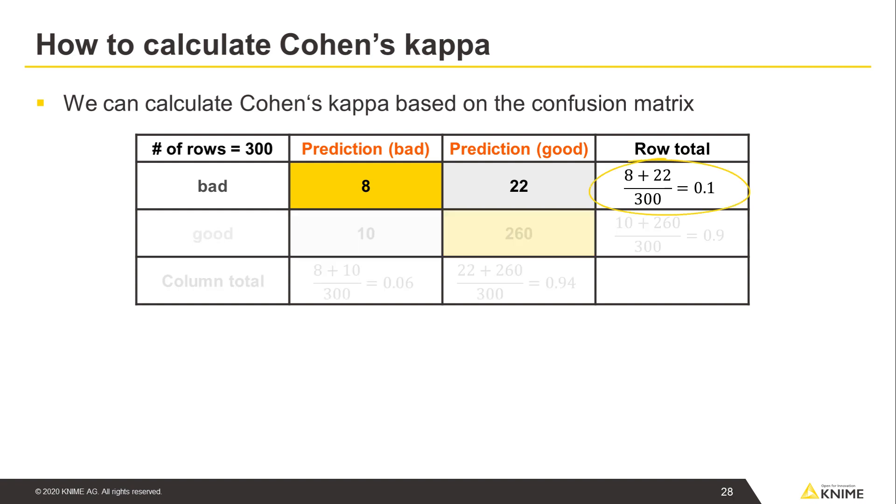Here in a top row total value, we see the a priori probability of the class bad, 10% in our case. In the left column total value, we see for how many customers the model predicted the credit rating bad, 6%.